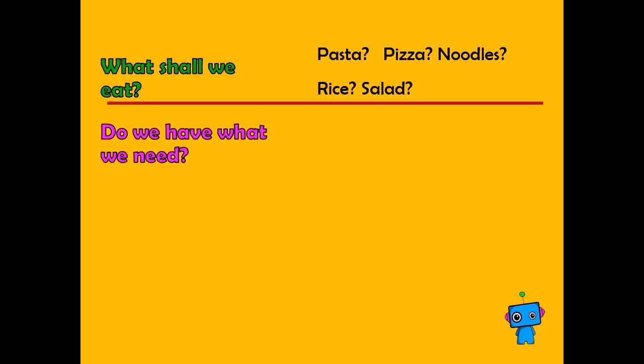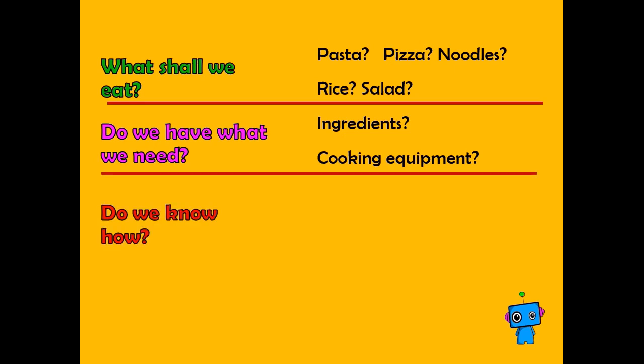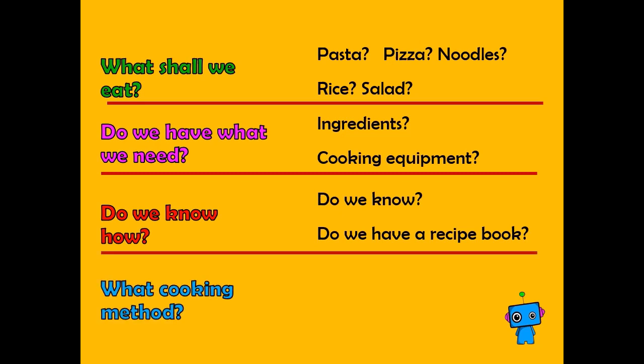Do we have what we need to make it? Have we got the ingredients? Do we have the right cooking equipment? Do we know how to do it? Have we done it before? Have we got a recipe book? Can we look online? And what cooking method will it need? Should we have it raw? Is it microwaved in an oven or a saucepan?